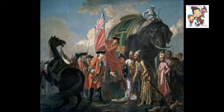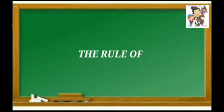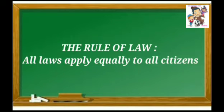It is often believed that the British colonialists introduced the rule of law in India — that means all are equal before the law. But this is not 100% true. Here we can take one example wherein the British laws were not uniform.